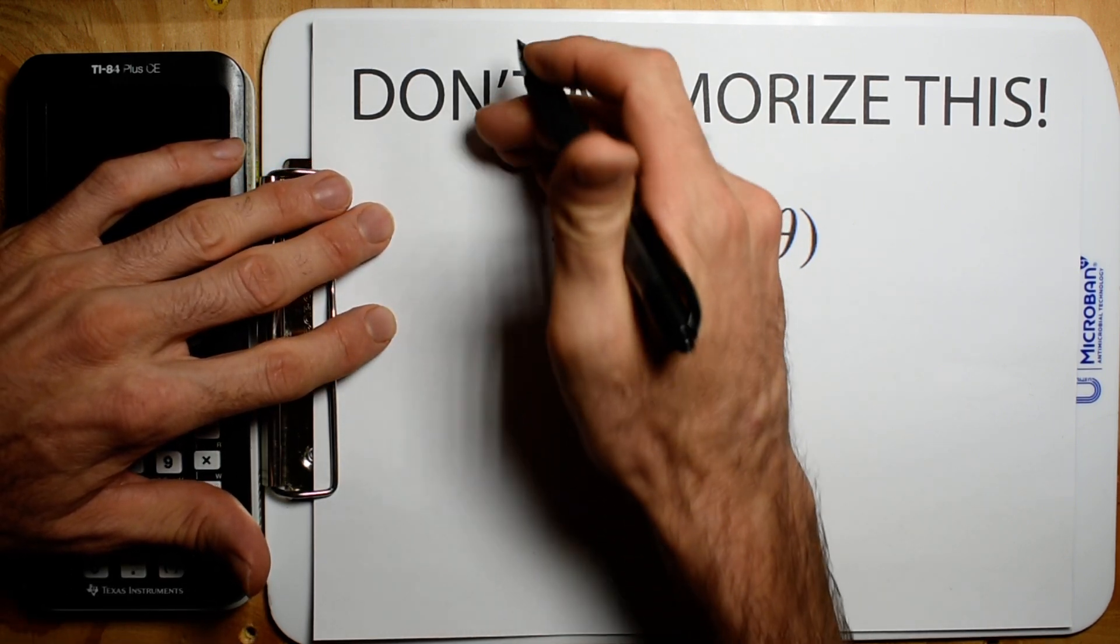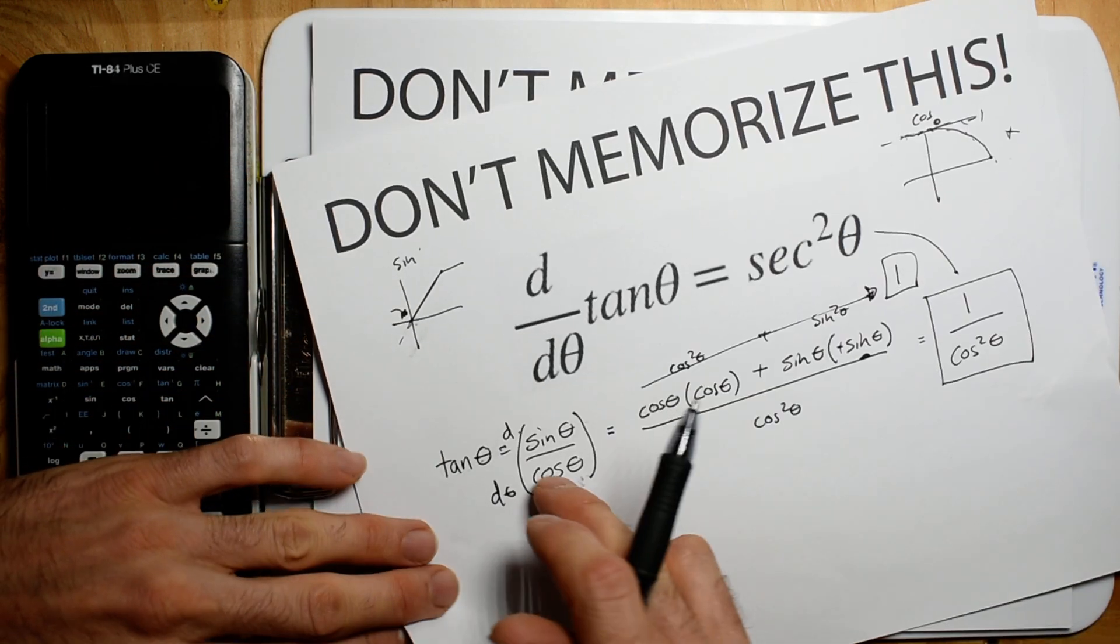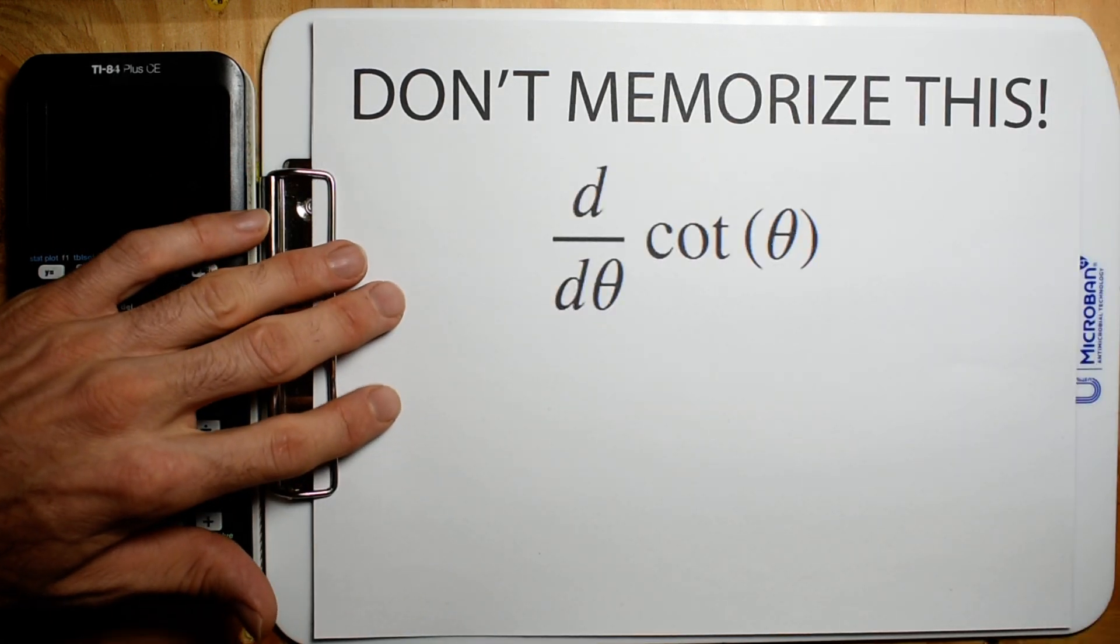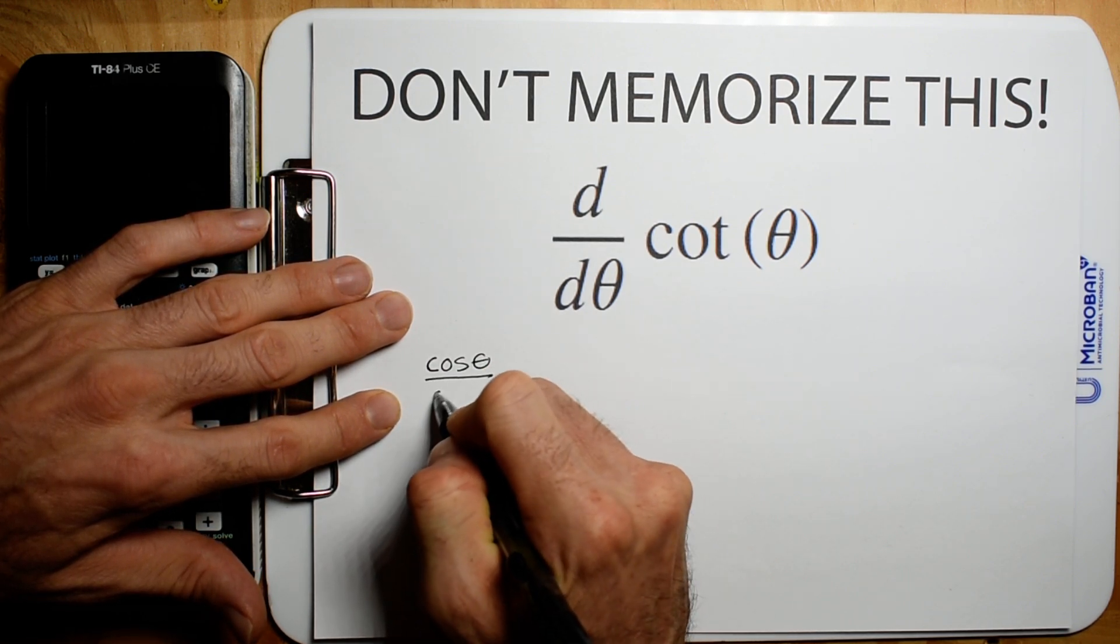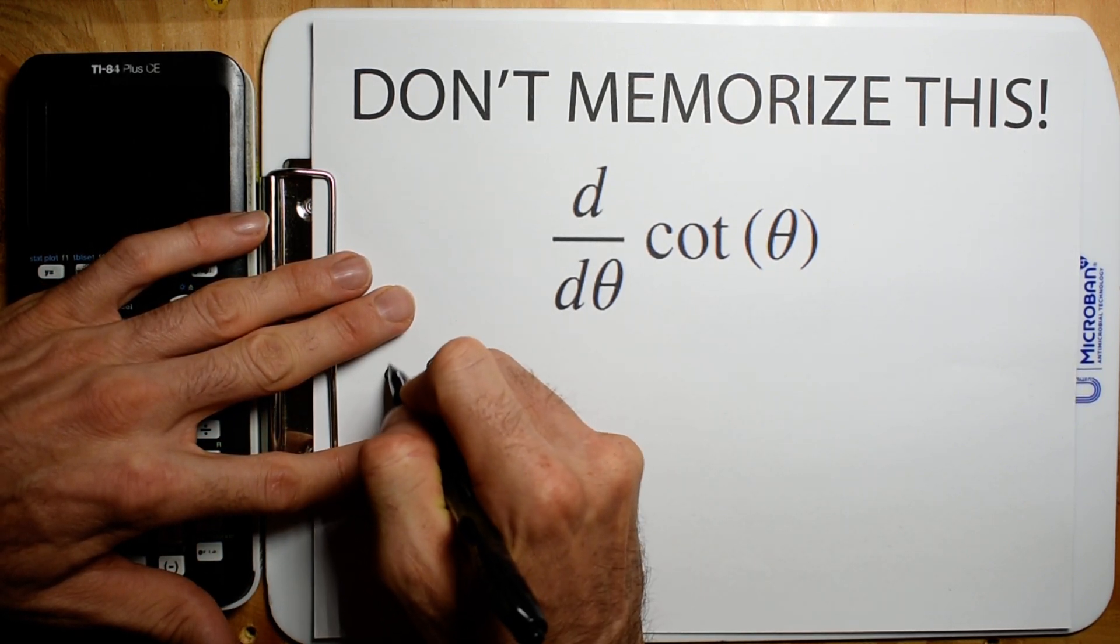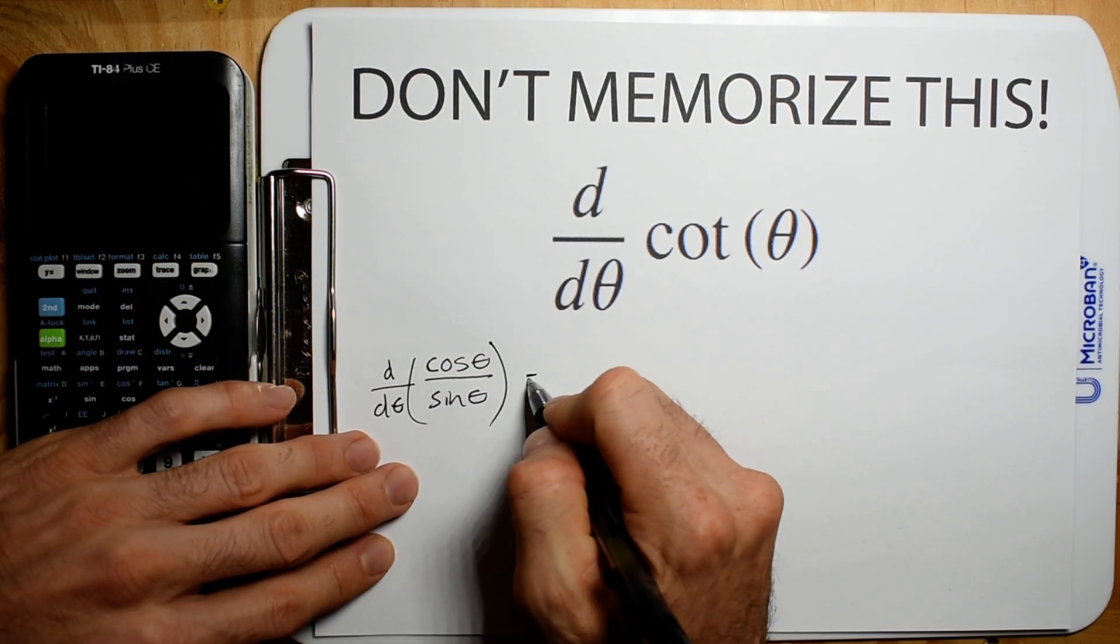Now, if tangent was sine over cosine, well, cotangent is just this flipped upside down. So we're just going to say cotangent is going to be cosine theta divided by sine theta. And now we're going to take the derivative of this. So we're going to do bottom d top.